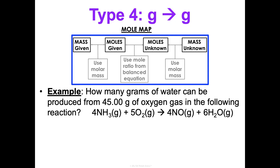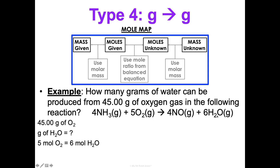Let's do an example. How many grams of water can be produced from 45.00 grams of oxygen gas in the following reaction? They gave us the balanced equation, so we're ready to dive in. What do we know? We know 45.00 grams of oxygen. What do we want to know? We want to know grams of water. We're going to need some mole ratios and some molar masses. What's the mole ratio of oxygen to water? Look at the balanced equation — five moles of oxygen for every six moles of water. We're also going to need the molar mass of oxygen and the molar mass of water.